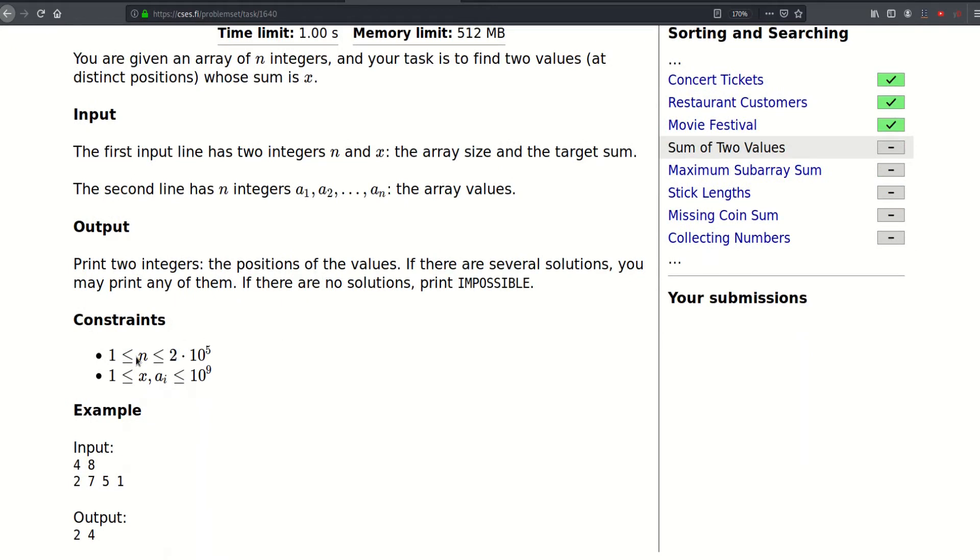And n can be up to 2 times 10 to the fifth and x can be as large as a billion, as well as the values of the array. In this example here the target sum is 8 and if we take position 2 and position 4 we would have a sum of 8. So that's why the answer is 2 and 4.